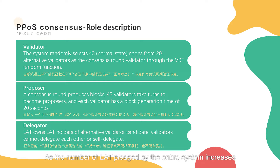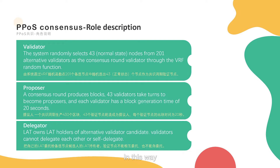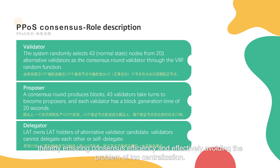As the number of lot pledged by the entire system increases, the security of the entire system will be higher. In this way, the selection range of validators is narrowed, thereby ensuring consensus efficiency and effectively avoiding the problem of over-centralization.